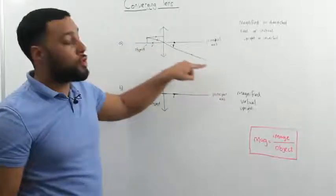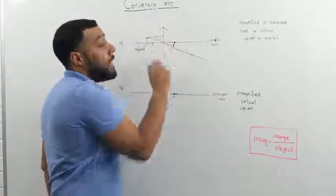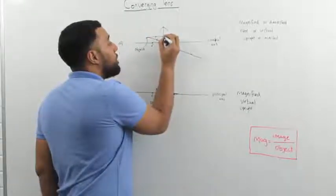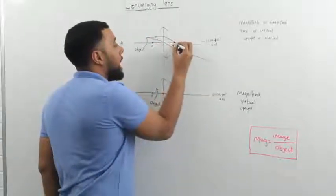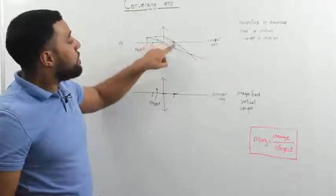It just keeps going straight through the lens. Whereas the one that hits the lens from the top of the object, it will refract. And it will go through the principal focus.